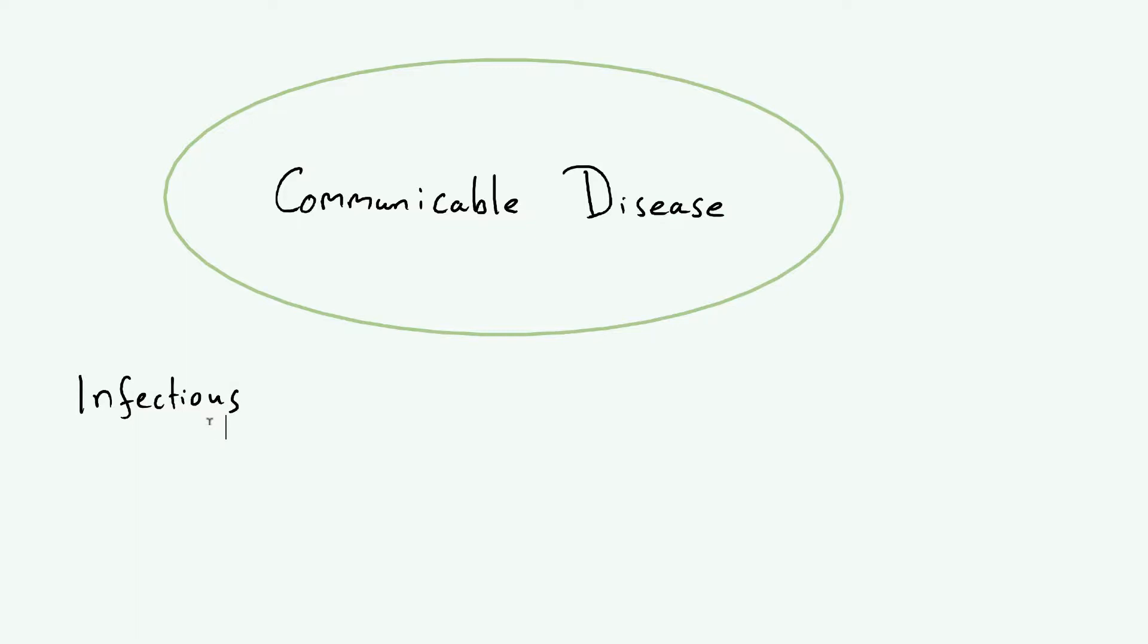What that means is it can be spread easily from organism to organism. If a disease was genetic, for example, that is not a communicable disease because it's one which you inherit. Whereas a communicable disease is one where if you have it, you could pass it on to someone else just by them being close to you. We'll have a look at how that works in more detail later on in this video.